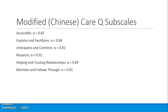Here are the modified Chinese CARE-Q subscales, which show very decent reliability. The six subscales are: accessible explains and facilitates, anticipates and comforts, respects, helping and trusting relationships, and monitors and follows through. They report very good internal consistency reliability coefficients.